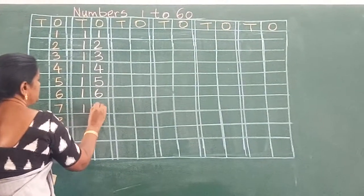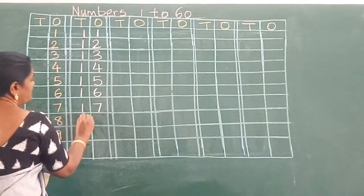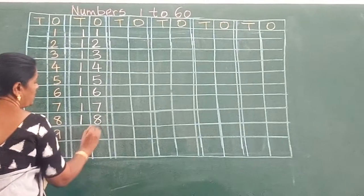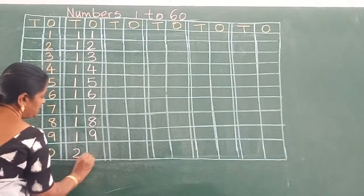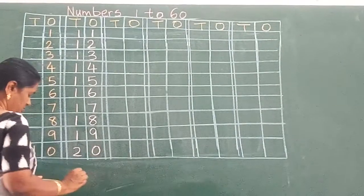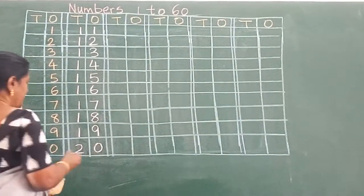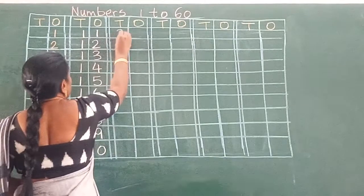1, 6, 16. 1, 7, 17. 1, 8, 18. 1, 9, 19. 2, 0, 20. Now the next number...